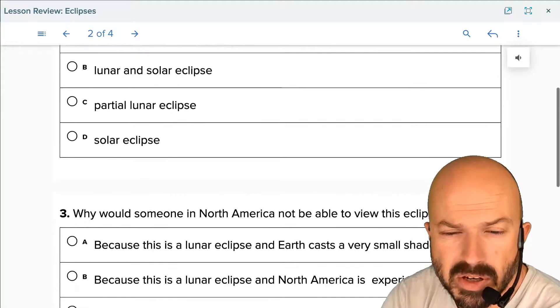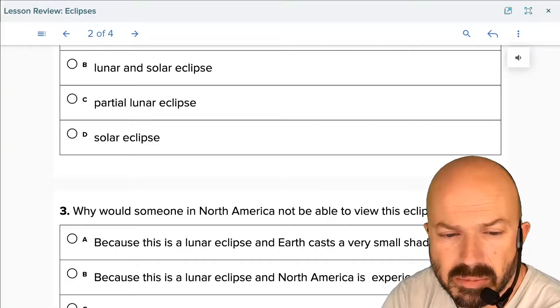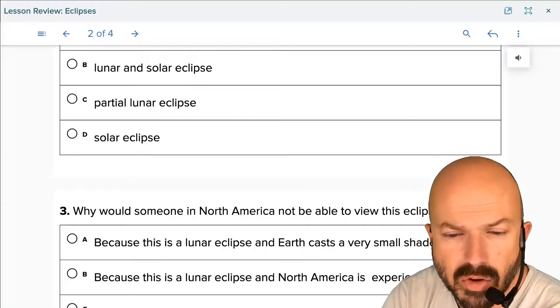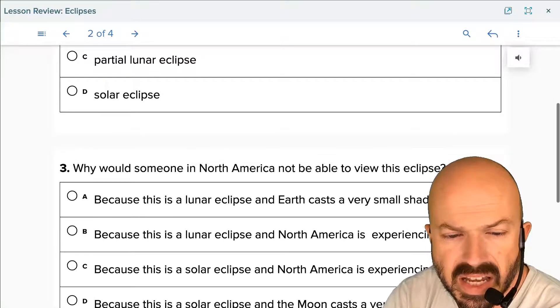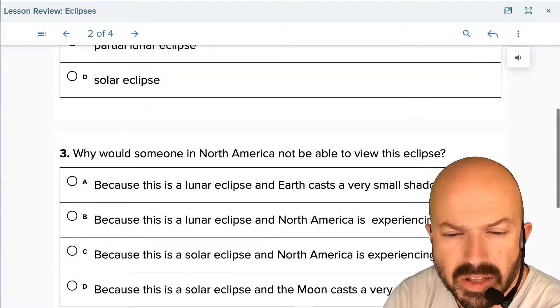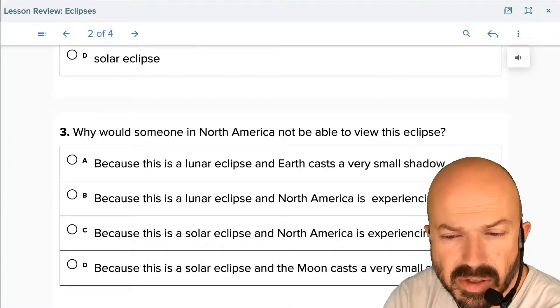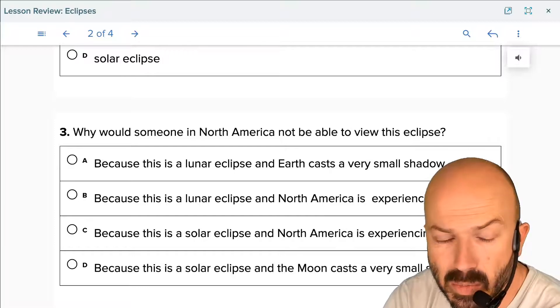Now why would someone in North America not be able to view this eclipse? Is that because this is a lunar eclipse and earth casts a very small shadow? Because it's a lunar eclipse and North America is experiencing day? Because this is a solar eclipse and North America is experiencing night? Or because this is a solar eclipse and the moon casts a very small shadow?